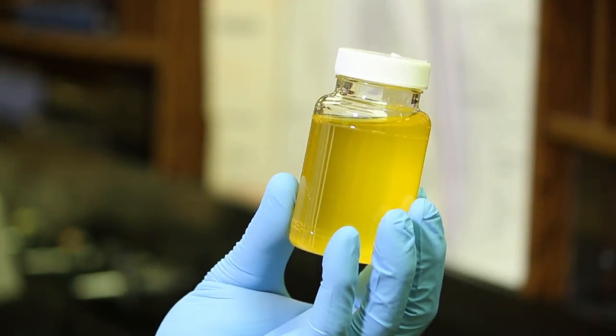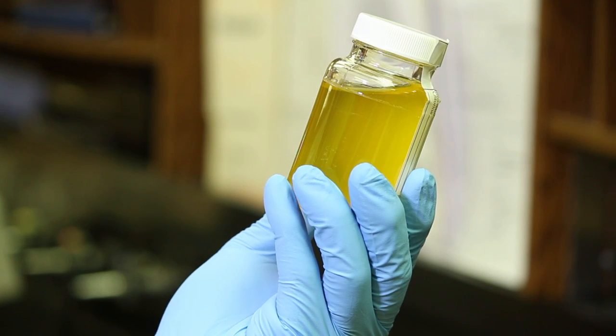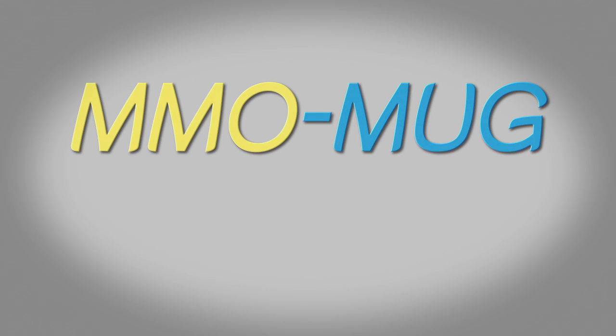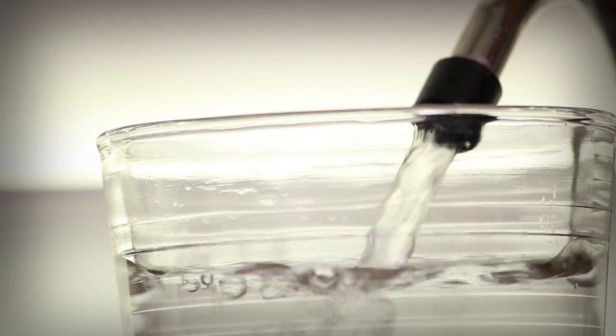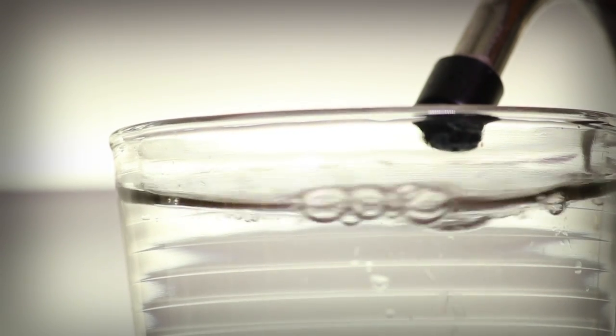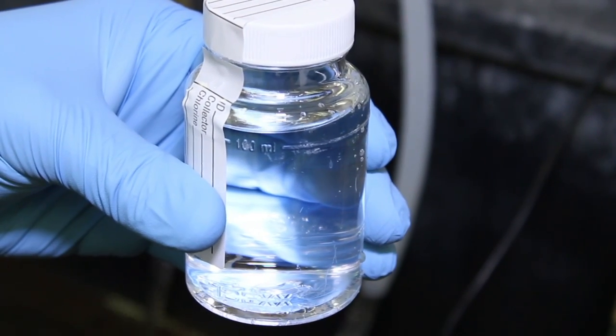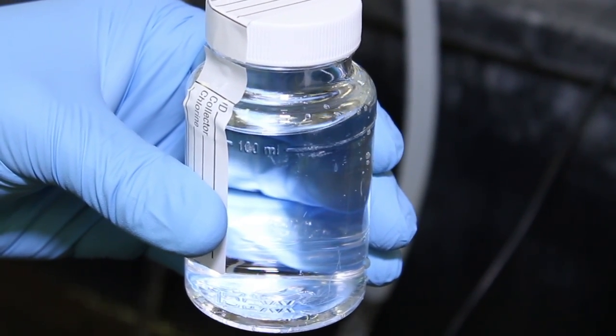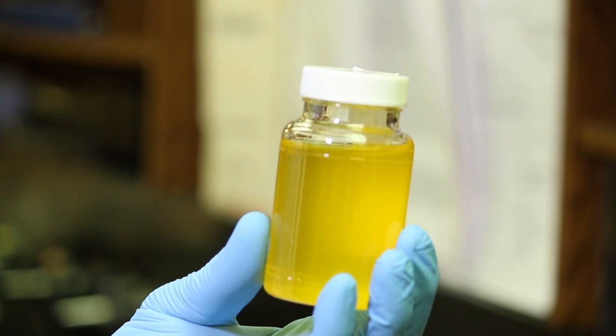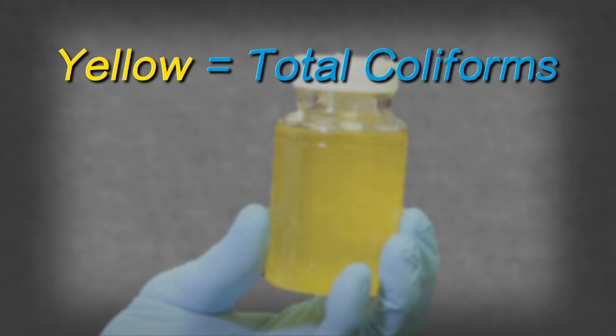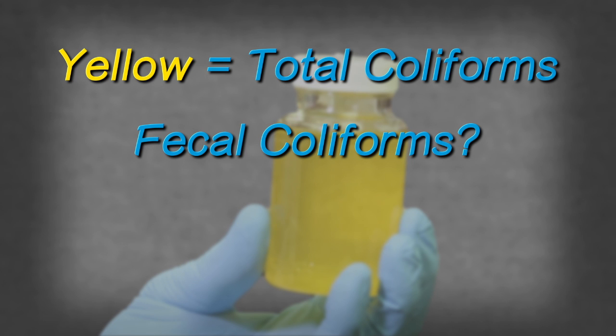After 24 hours of incubation, we inspect the test vials looking for a yellow color. The MMO in the MMOMUG will turn yellow in the presence of total coliforms. In drinking water samples, this should be rare in less than 5% of samples analyzed. If a sample vial's contents are colorless, the test is negative for total coliforms. If a yellow color is evident, the sample is positive for total coliforms. In this case, we also need to determine if the more critical fecal coliforms are present.